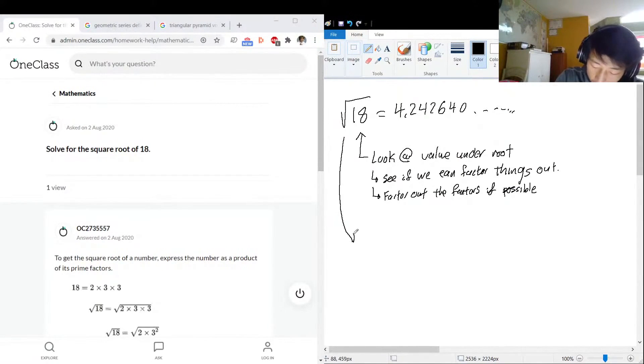So, let's think about 18. We know that 18 is 3 times 6, right? 3 times 6 is equal to 18, so we have 3 times 6 under the root.